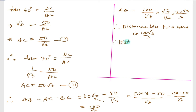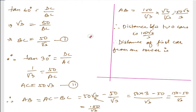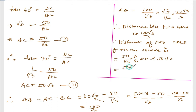The distance of the first car from the tower is BC, which is 50 divided by root 3. Multiplying by root 3 over root 3 gives 50 root 3 divided by 3. The distance of the second car from the tower is AC, which is 50 root 3. So the two distances from the tower are 50 root 3 divided by 3 meters and 50 root 3 meters.